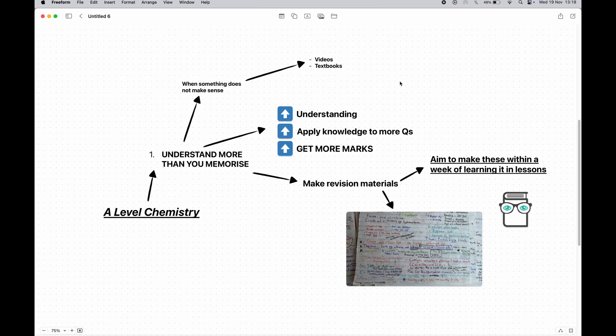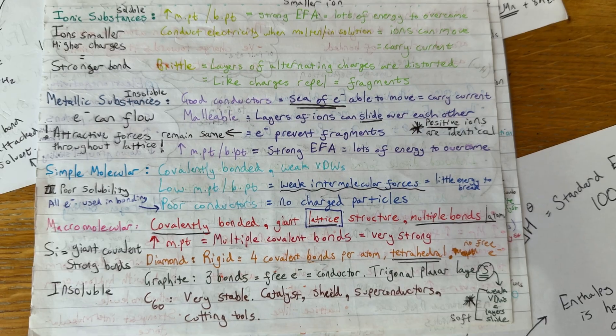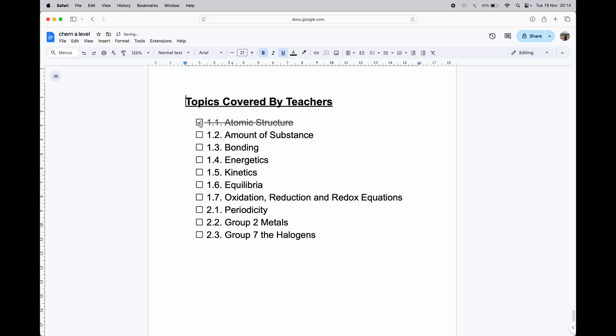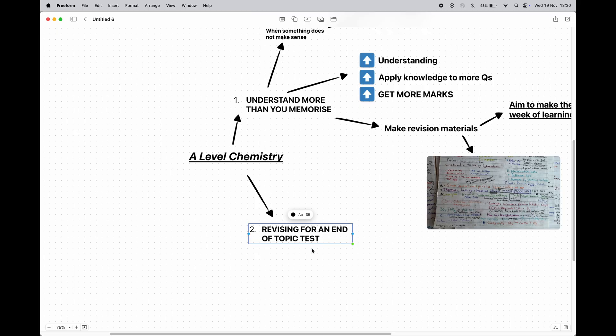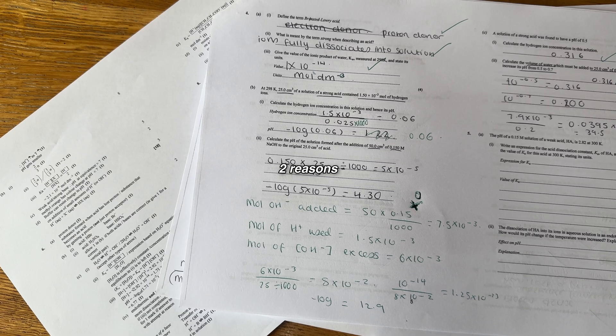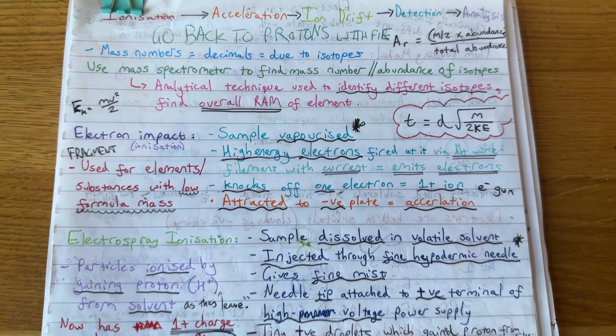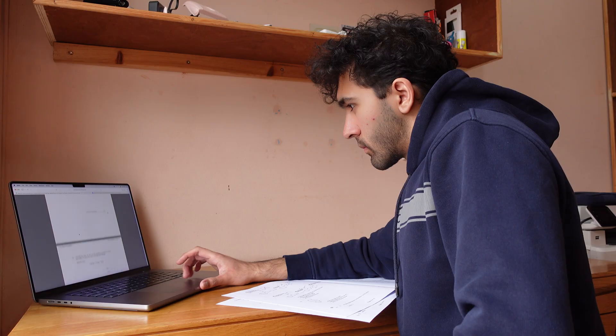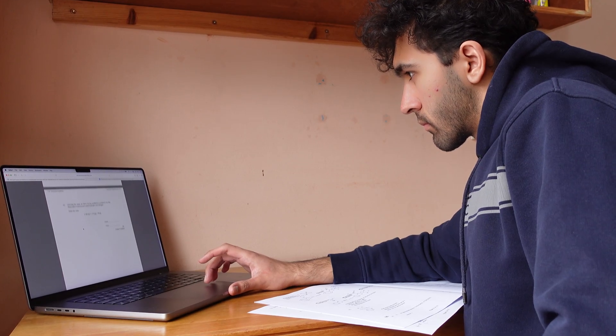The first step to my revision process for A Level chemistry was making notes. After covering a full topic in the lesson, the teacher would give us an end of topic test. To revise for this, I would start using practice questions. There's two reasons I used practice questions: one, to see what I had forgotten since making notes so I can revise that, and two, to see potential questions that could come up tomorrow.